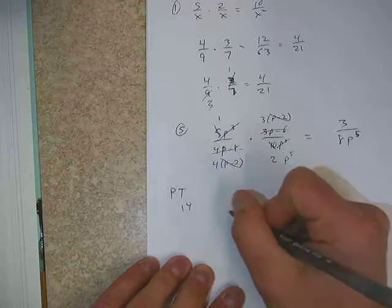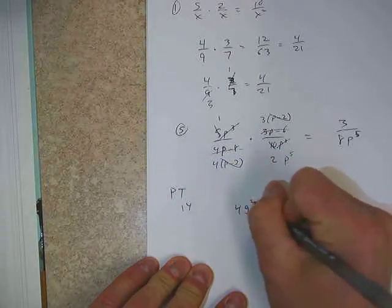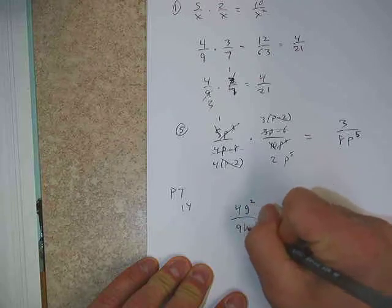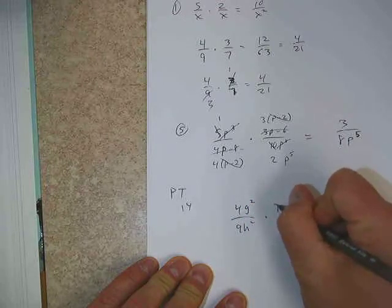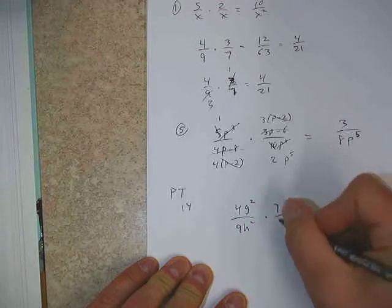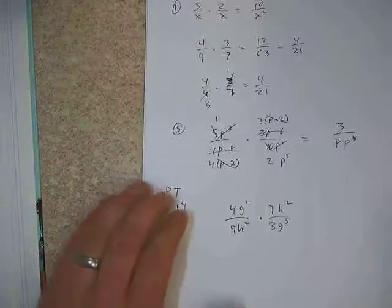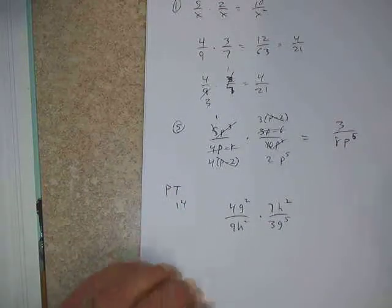So let's move over to the practice test. Start with number 14. The practice test, we've got 4g squared, we've got 9h squared, 7h squared here, and 3g to the 5th here.